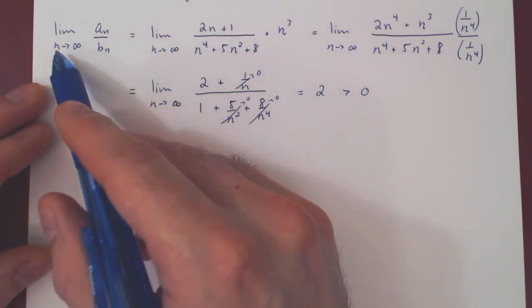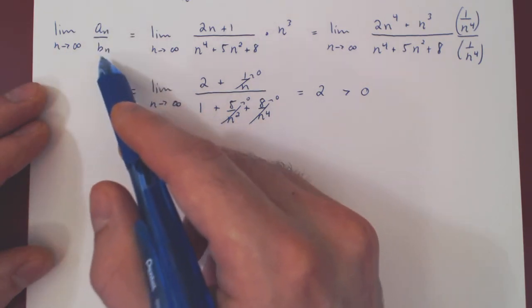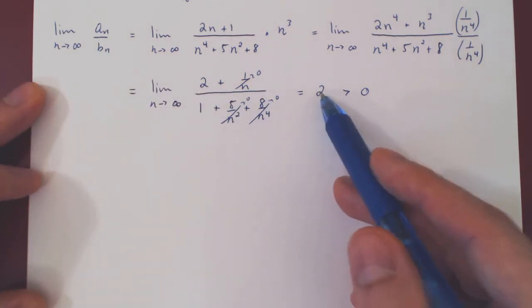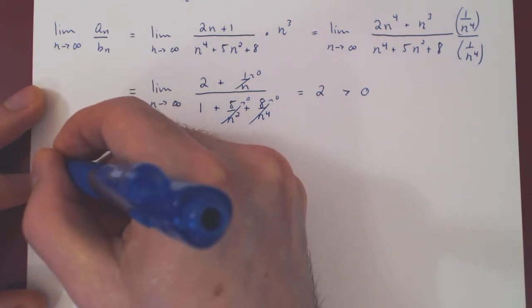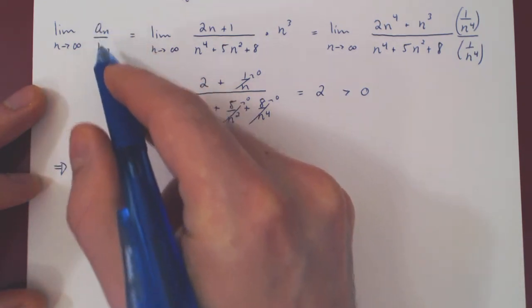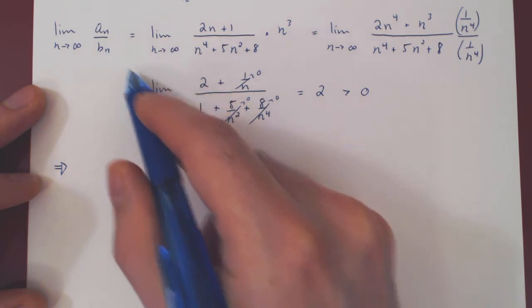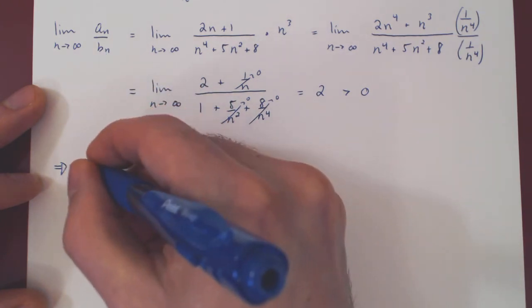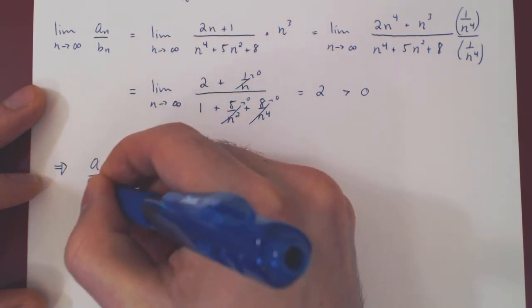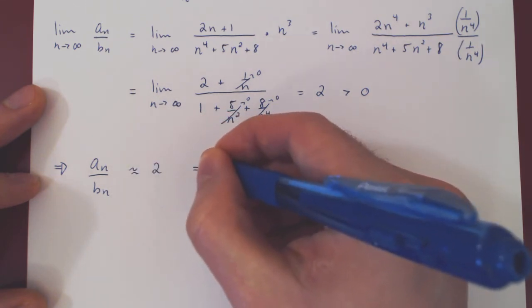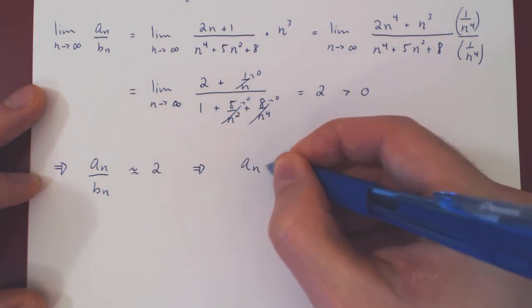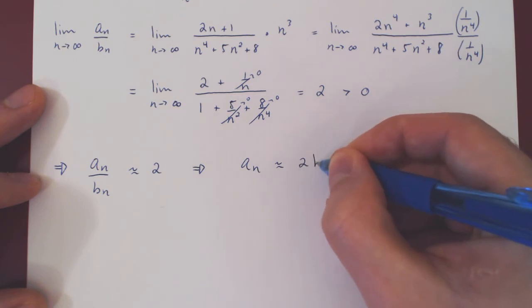So let's look at what this says. When N is large, AN over BN is very close to 2. So if we multiply by BN on both sides, AN must be roughly 2 times BN. So AN over BN is roughly 2 when N is large. So AN is roughly 2 times BN.